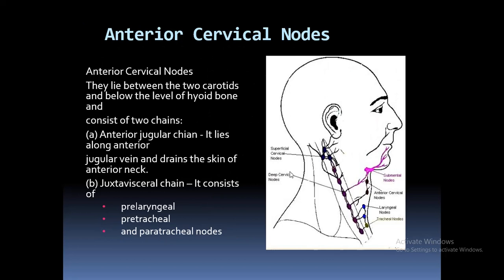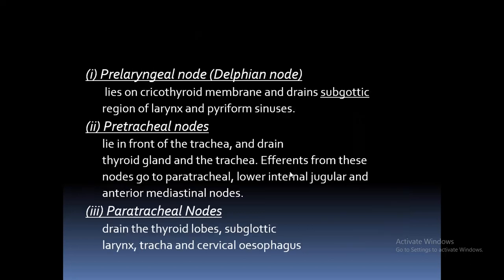The anterior cervical nodes lie between the two carotids and below the level of the hyoid bone. They consist of the anterior jugular chain, lying along the anterior jugular vein and draining the skin of the anterior neck, and the juxtavisceral chain, which consists of pre-laryngeal, pre-tracheal, and paratracheal nodes. The pre-laryngeal nodes are also called delphian nodes; they lie on the cricothyroid membrane and drain the subglottic region of the larynx and pyriform sinuses. The pre-tracheal nodes lie in front of the trachea and drain the thyroid gland and trachea; their efferents go to the paratracheal, lower internal jugular, and anterior mediastinal nodes. The paratracheal nodes drain the thyroid lobe, subglottic part of the larynx, trachea, and cervical esophagus.